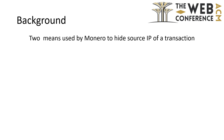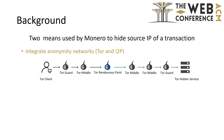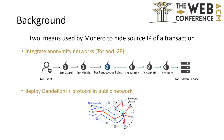To protect the privacy of Monero users, Monero employs two means to hide the source IP address of a transaction. One means is to integrate anonymity networks Tor and I2P. A typical situation for using Monero over Tor is to connect two Monero Tor hidden service nodes, which can hide their IP addresses from each other to avoid Sybil attacks. Another means is to deploy the Dandelion++ protocol in the public network.